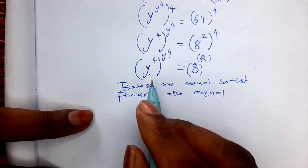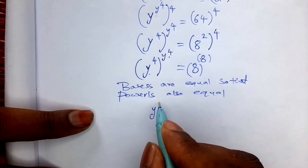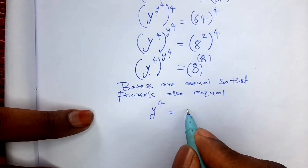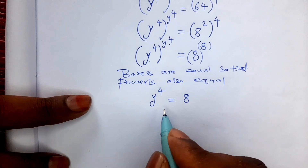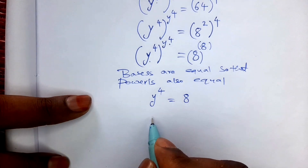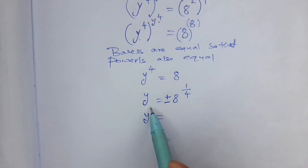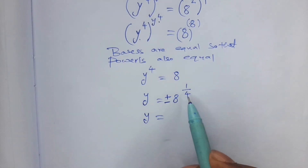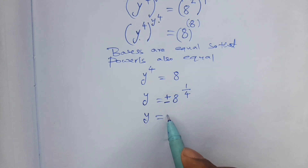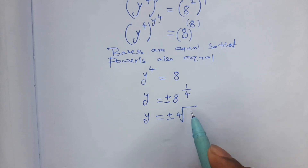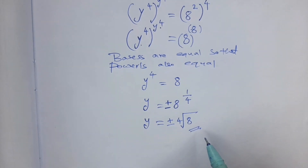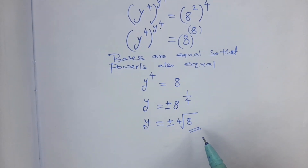So y to the power 4 is equal to 8. Transposing the power 4, we get y is equal to plus or minus 8 to the power 1 by 4, which can be written as plus or minus the fourth root of 8. This is the final answer. If you like this, please subscribe, like, and share. Thank you all, see you again.